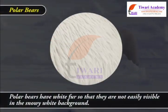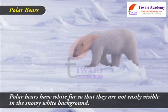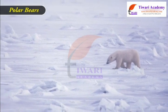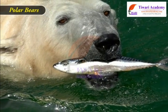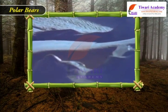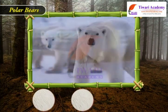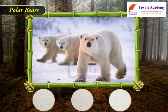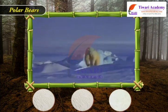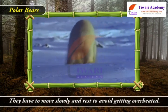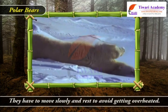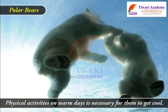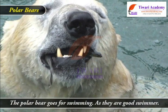Polar bears have white fur so that they are not easily visible in the snowy white background. This protects them from their predators and also helps them to catch their prey. It also protects them from extreme cold. They have two thick layers of fur, and also a layer of fat under their skin. In fact, they are so well insulated that they have to move slowly and rest to avoid getting overheated. Physical activity on warm days is necessary for them to cool down, so the polar bear goes swimming.